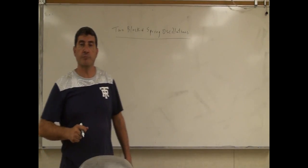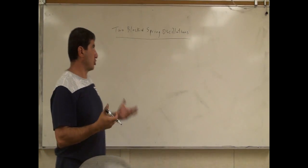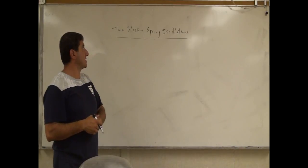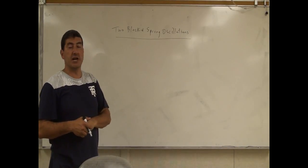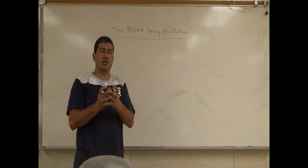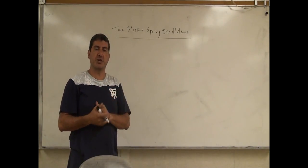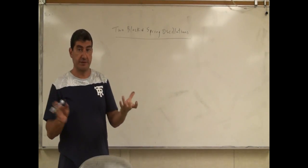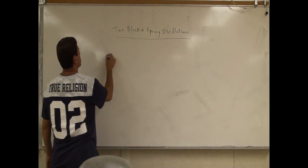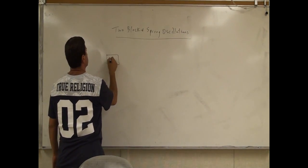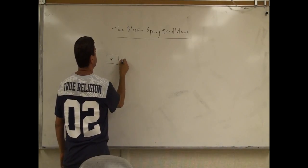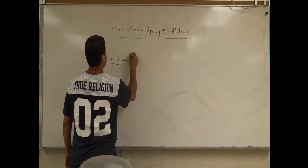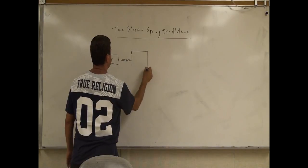Welcome back. The demo I'm going to do — it's also a good physics problem — is called two blocks and spring oscillations. We're going to have a spring of a certain spring constant k, then two different blocks with different masses. We have here, let's call this little m, and we have a spring, then we're going to call this big one big M.